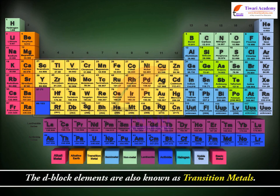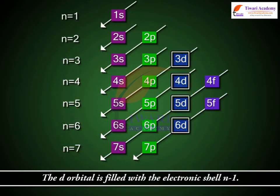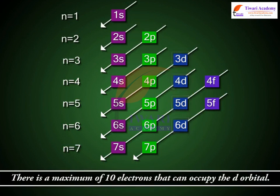The D block elements are also known as transition metals. The D orbital is filled with the electronic shell n-1. There is a maximum of 10 electrons that can occupy the D orbital.